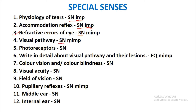Visual pathway will be asked as a short note and it is the most important short note. You must know about the visual pathway. The 10 layers of the retina and photoreceptors will be asked as a short note. Write in detail about the visual pathway and their lesions — it will be asked as a full question and it is the most important full question.